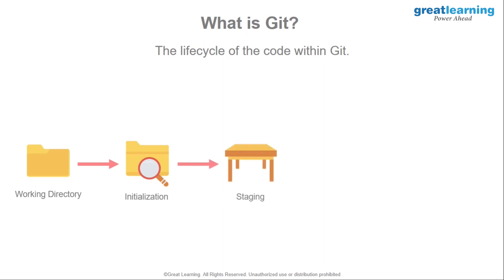The next step is staging. Once initialization is complete, work on the code can begin — additions, deletions, any changes. Once you've made those changes to a file like index.html, you go ahead and stage that file. Staging tells Git what changes were made to a specific file. Git will then automatically identify the differences compared to the previous version, tracking all changes that have been made.